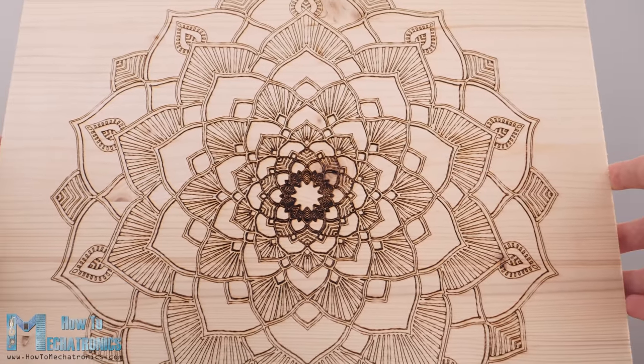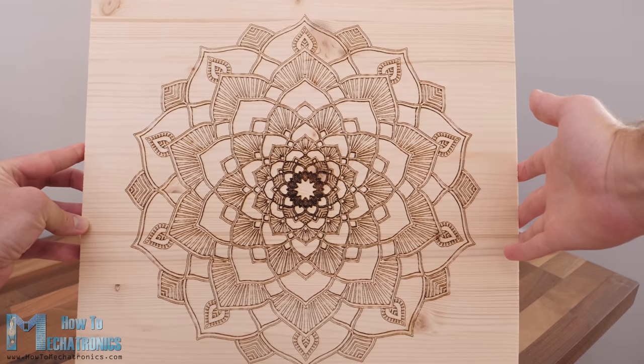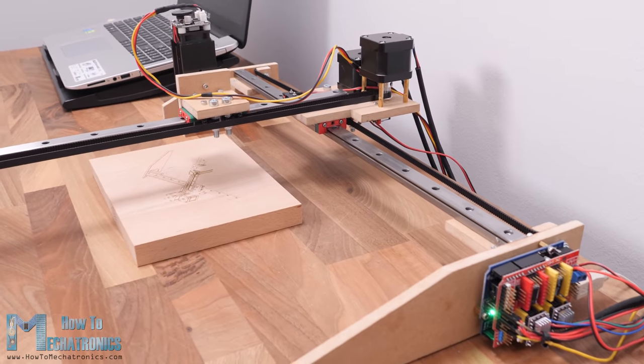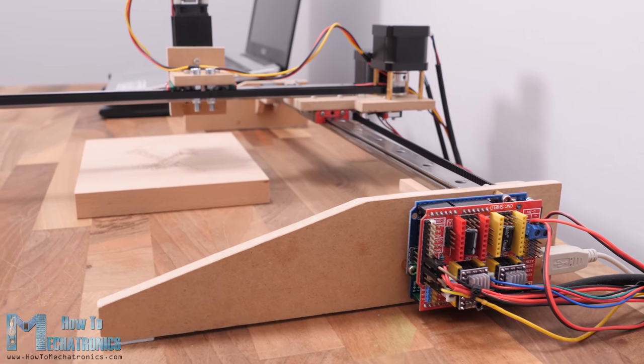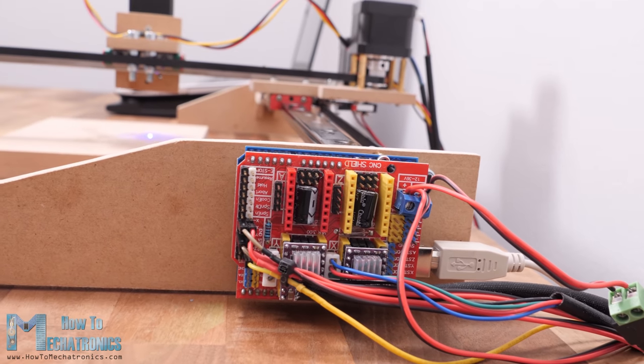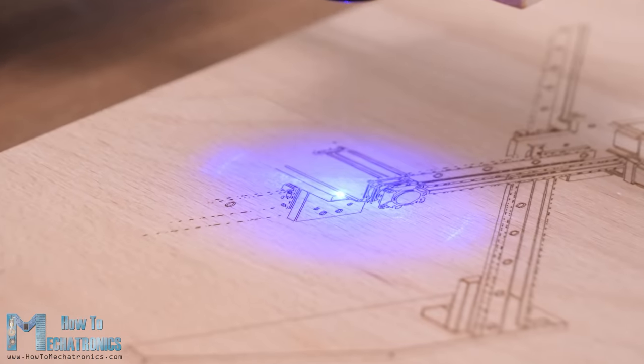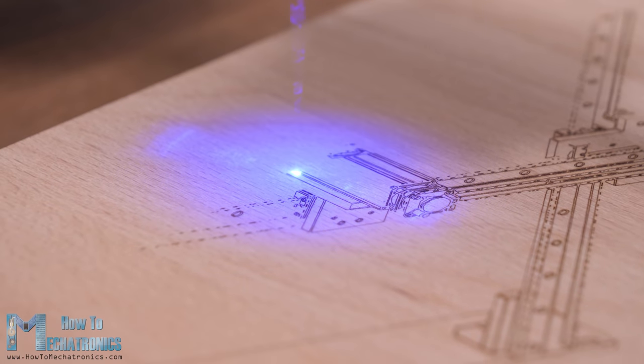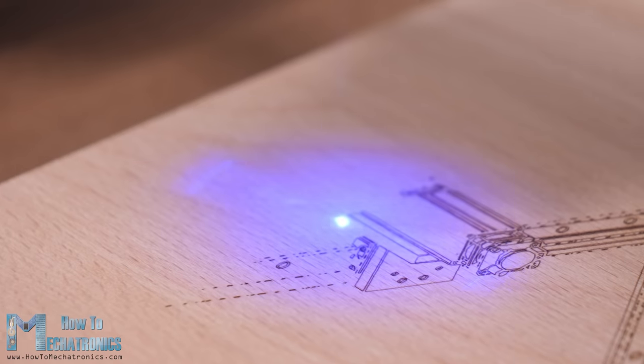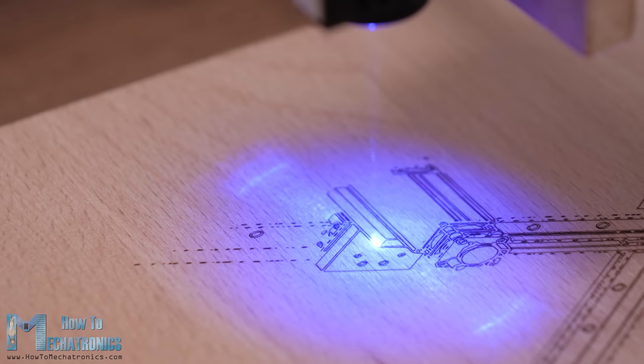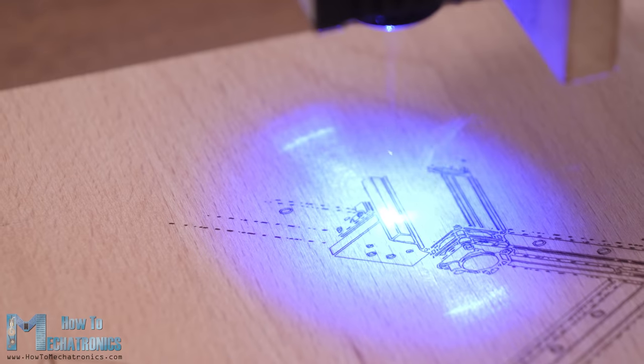To be honest I was surprised how good the engravings turned out. The brain of this CNC machine is an Arduino Uno board in combination with a CNC shield, but more details about that as well as how to prepare your drawings or images for laser engraving, make g-codes and control the machine using free open source programs a bit later in the video.